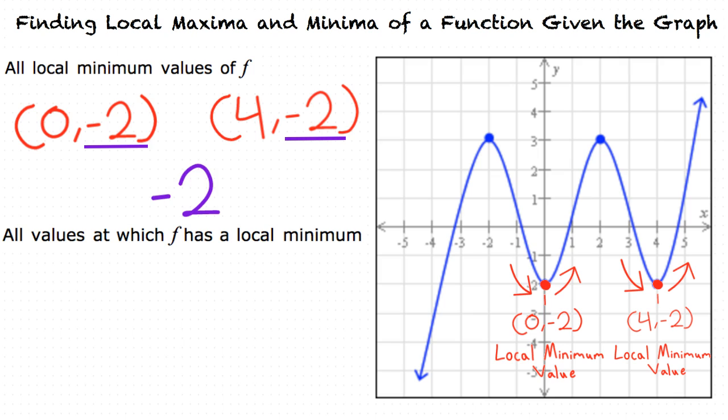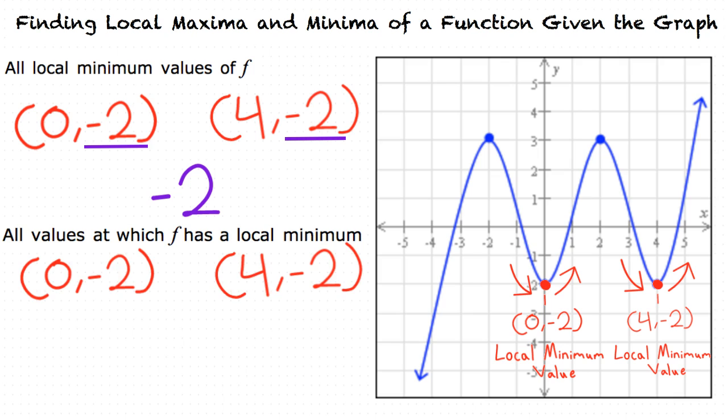Next, we need to find the values at which function f has a local minimum value. To find these values, we look at the x-values of our local minimum points. In this case, our x-values are 0 and 4. This means that the values at which function f has a local minimum value are 0 and 4, which are our final answer.